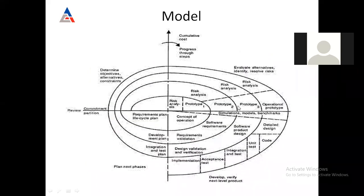The accurate design of the spiral model does not start from the center. It starts a little bit to the left side of the center point in the first quadrant. This makes it clearly defined that the model starts from the first quadrant, then moves to the second, third, and fourth quadrant — completing one spiral before the next begins. Always end the spiral at the top, as that point shows the customer has tested the software, is satisfied, and no further enhancement is required. At this point the software is ready to be launched.